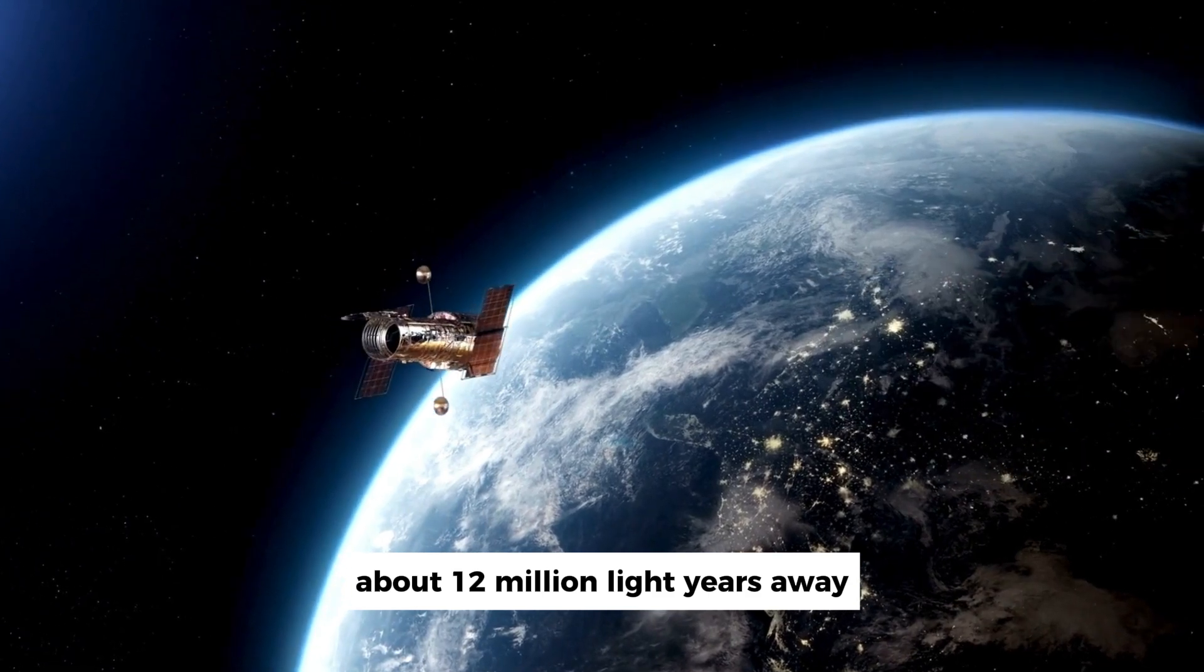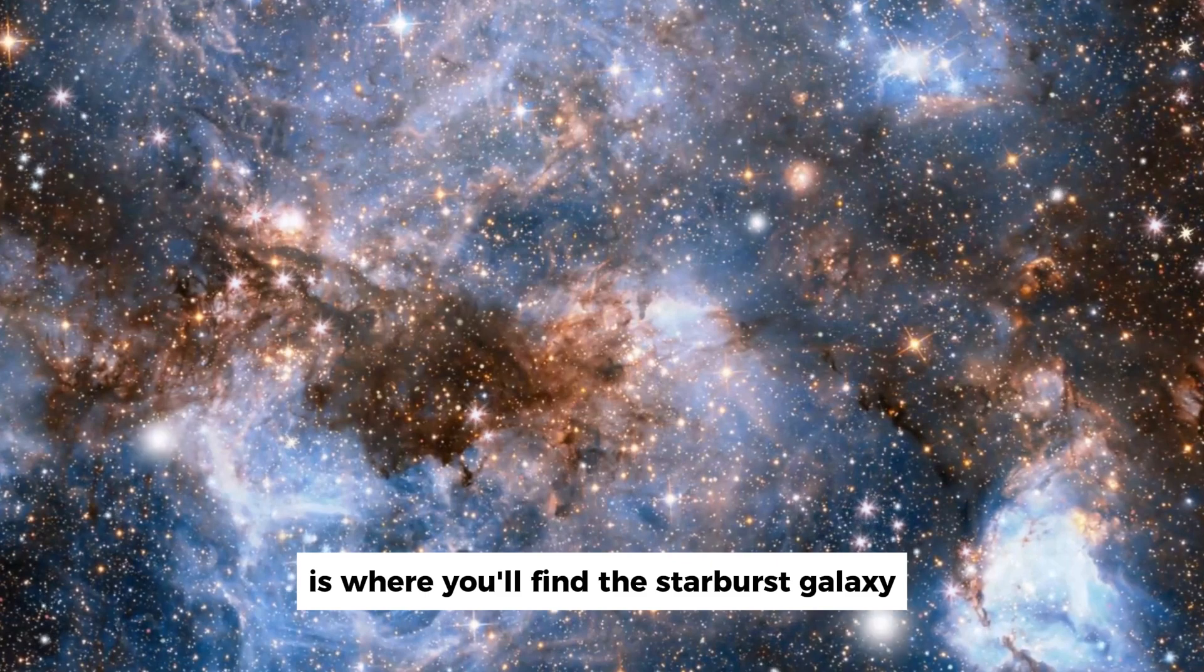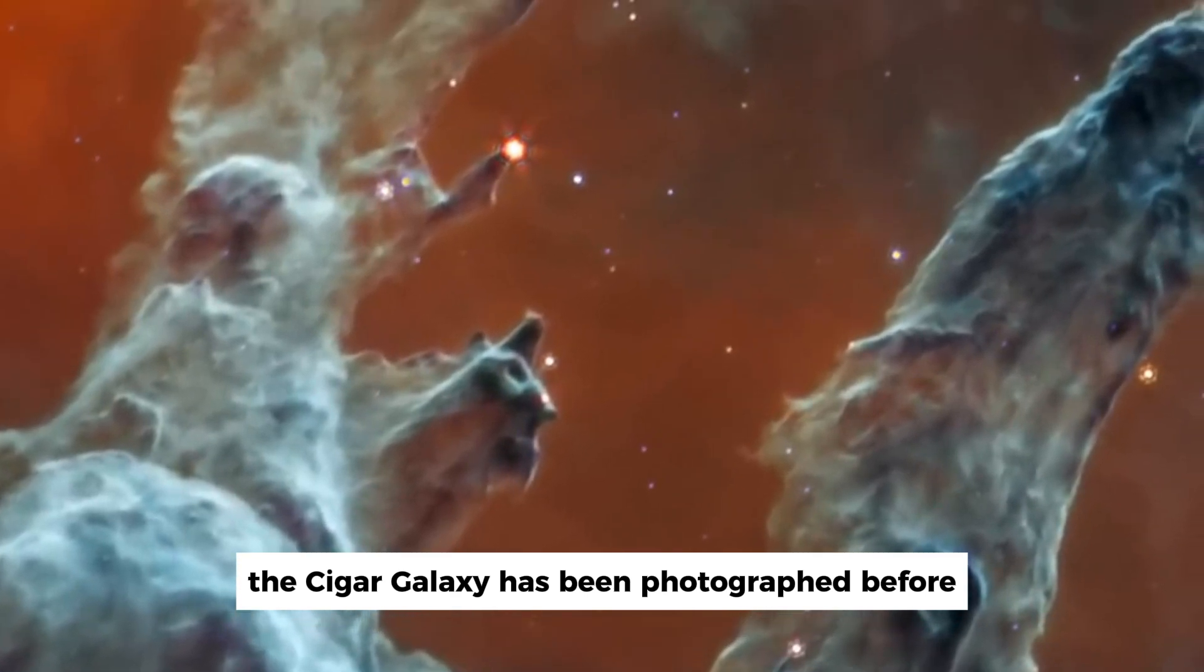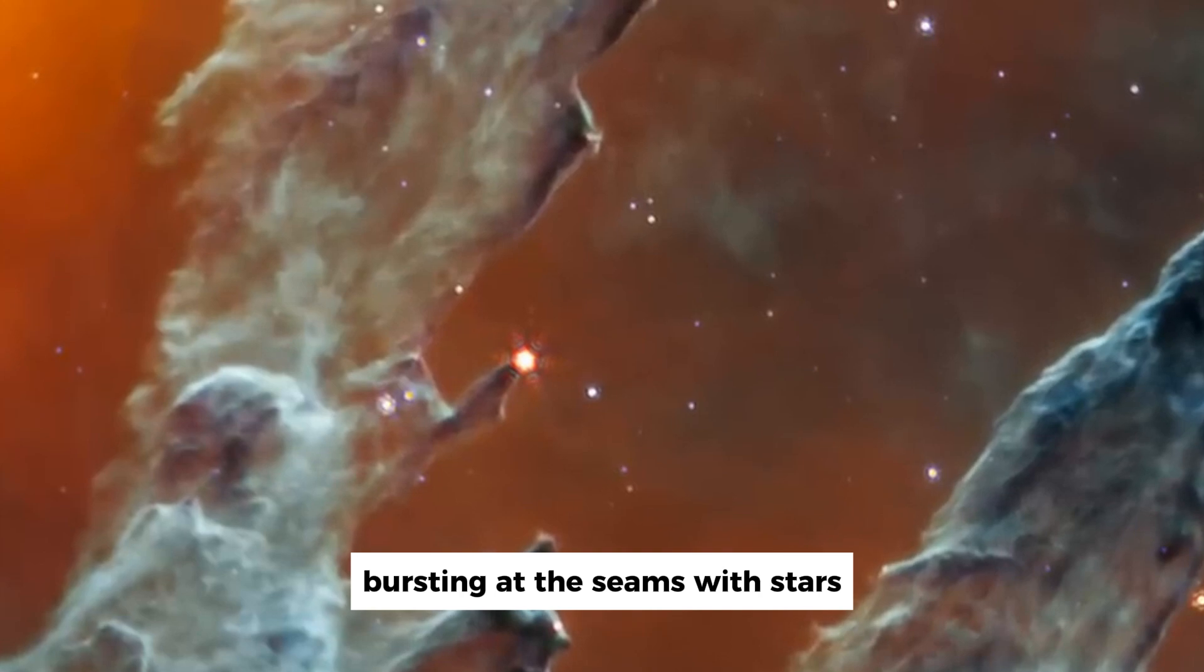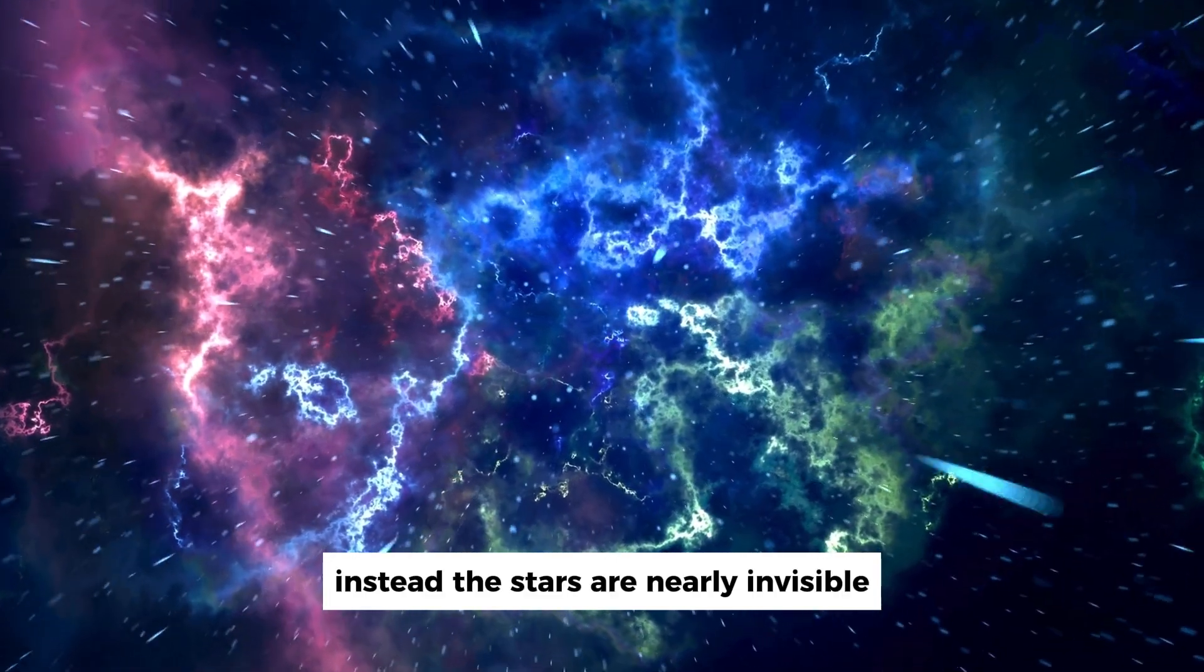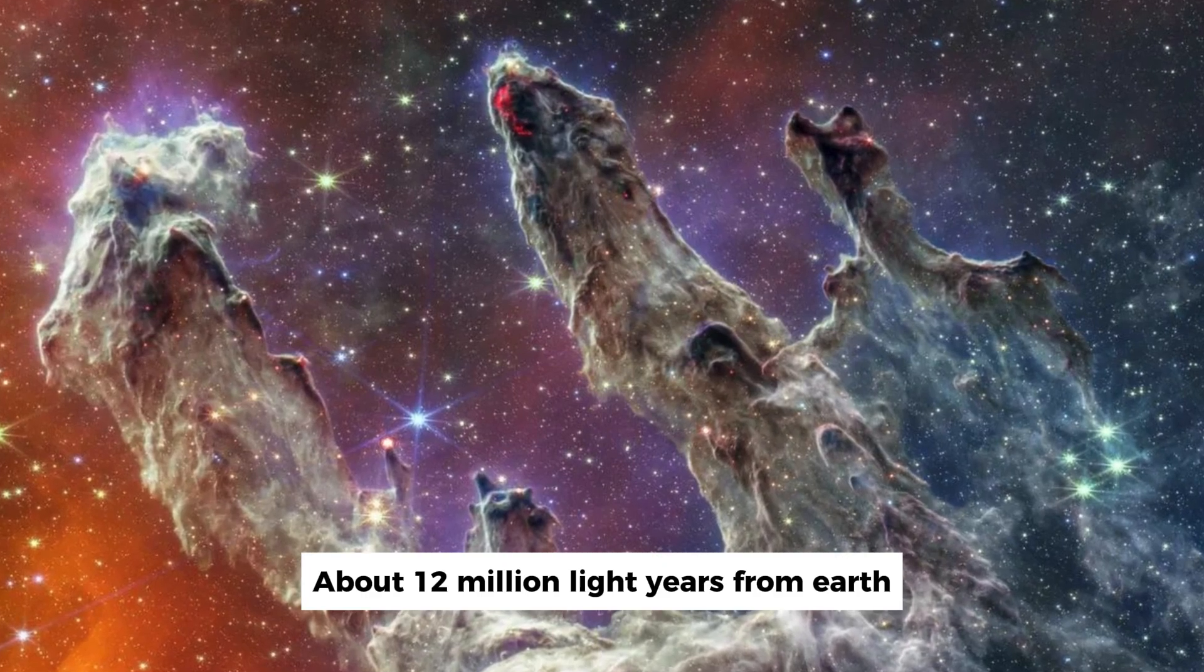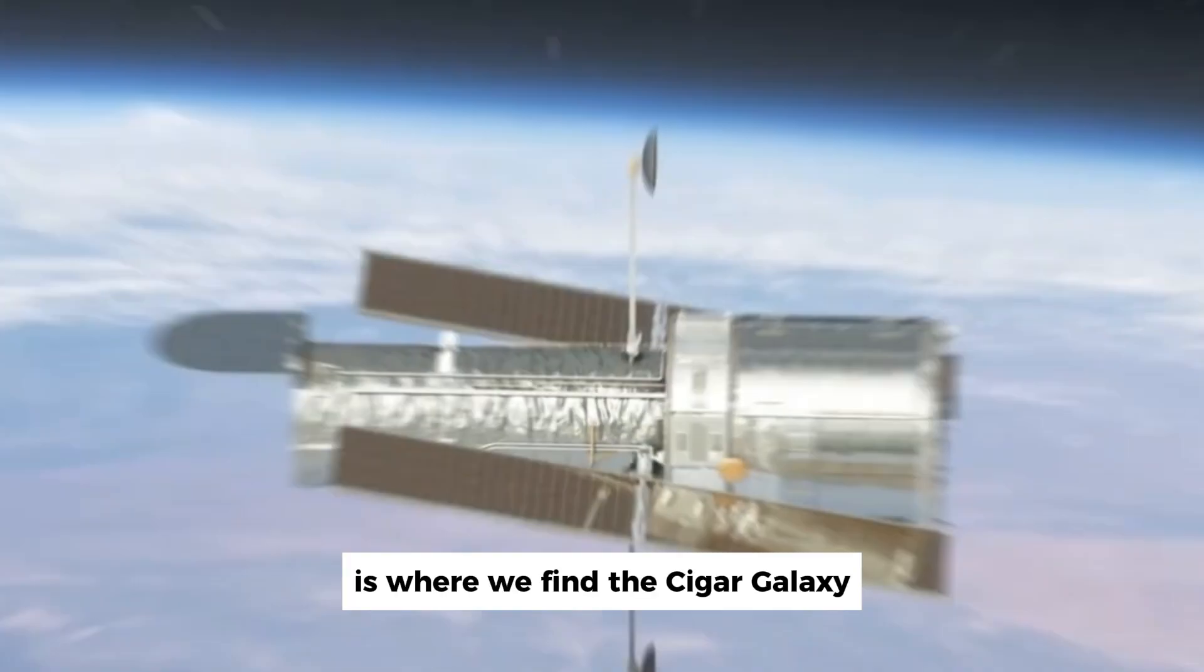About 12 million light-years away in the constellation Ursa Major is where you'll find the starburst galaxy, the Great Bear. The Cigar Galaxy has been photographed before, previous pictures depict a galaxy bursting at the seams with stars, but this picture looks nothing like them. Instead, the stars are nearly invisible against a backdrop of blazing gas and dust.